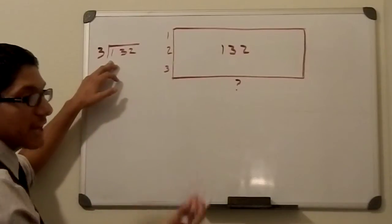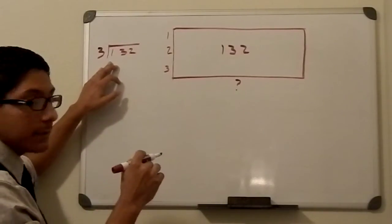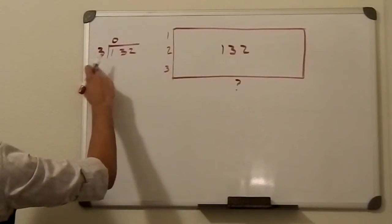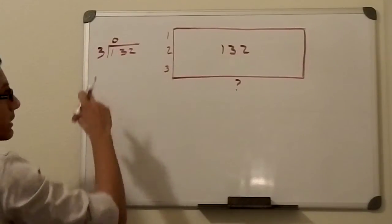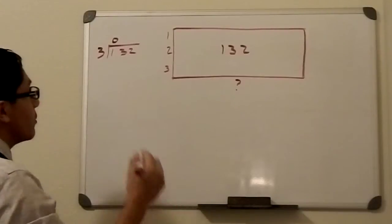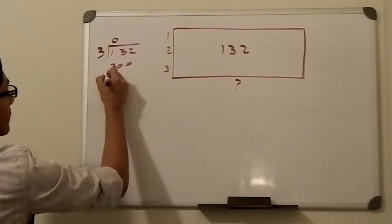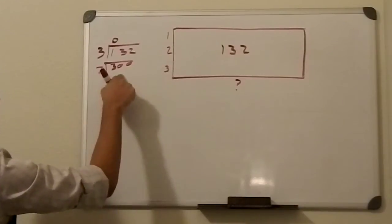And 3 doesn't go into a hundred a hundred amount of times. We would have to at least have a minimum of 300, right, for it to go in at least one time. And that's why we have a zero there.